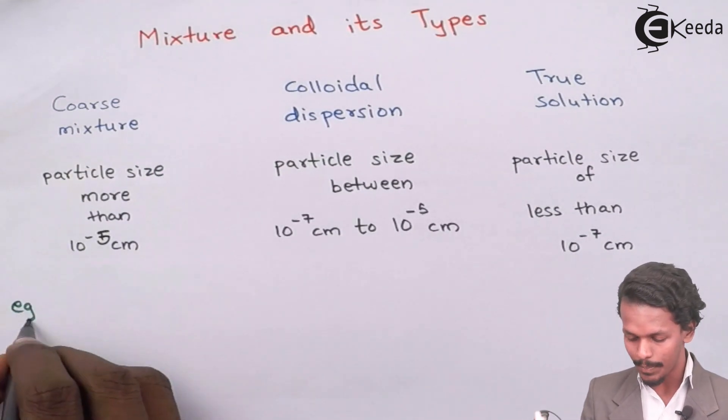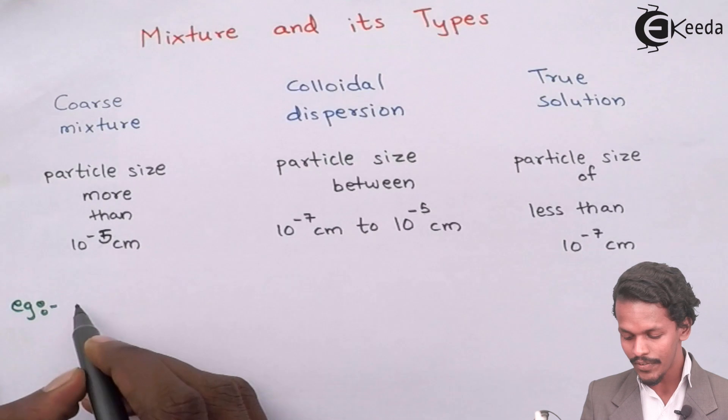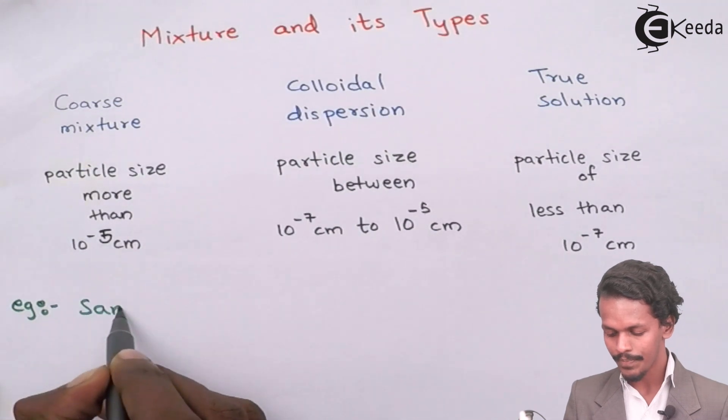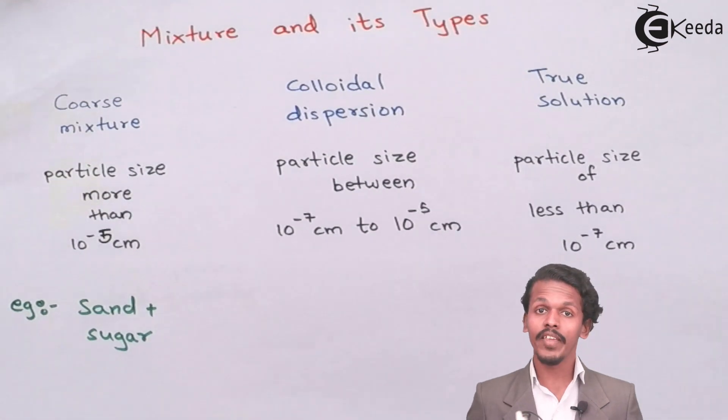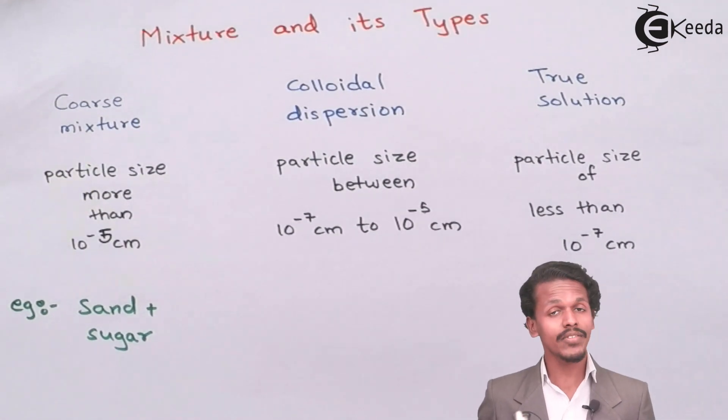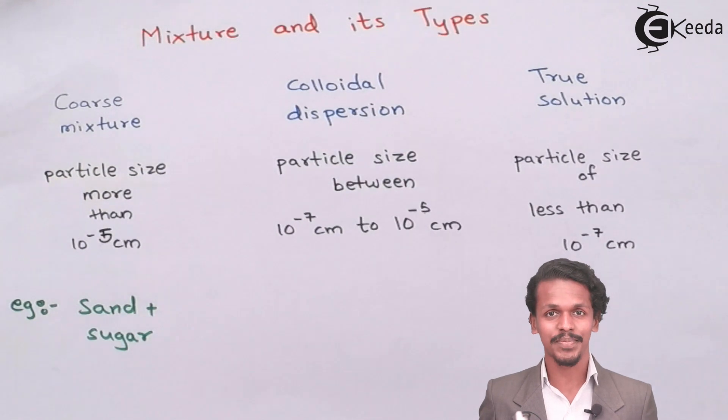The example is very much simple. Suppose if we mix sand and sugar, will they be mixed up with each other? No. As well as we can see the particle size also. So therefore this is an example of a Coarse Mixture.